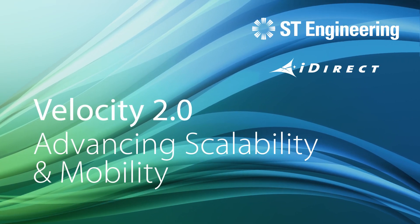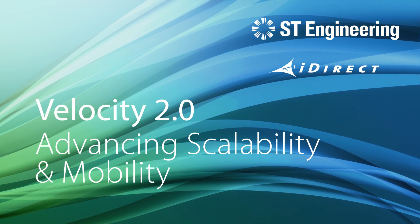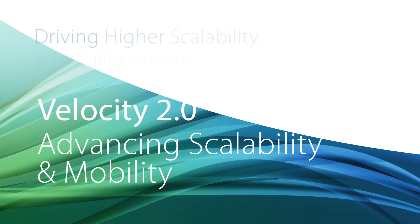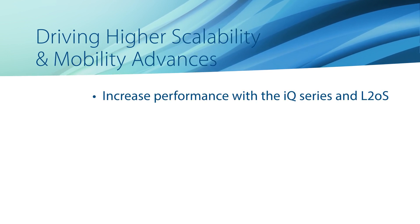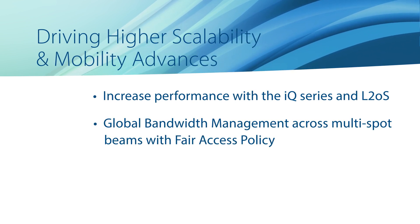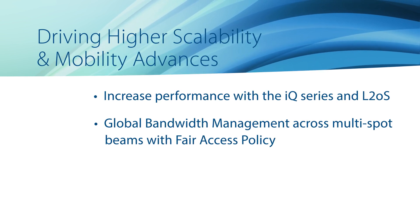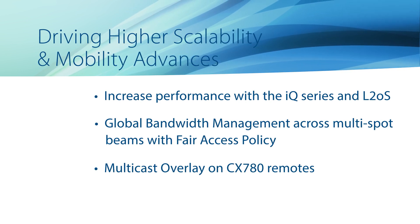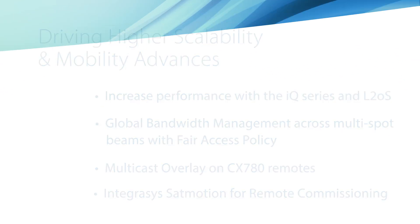Velocity 2.0 is ST Engineering iDirect's latest software release. It features new capabilities as well as operational improvements for advanced mobility networks and large-scale deployments. With Velocity 2.0, you can gain higher performance with the iQ Series remotes and Layer 2 over satellite for protocol transparency. Global bandwidth management allows you to manage large-scale bandwidth pools across multi-spot beam capacity globally with fair access policy to control usage. Velocity 2.0 also enables multicast overlay on CX780 commercial aero remotes and supports SatMotion for streamlined remote commissioning.